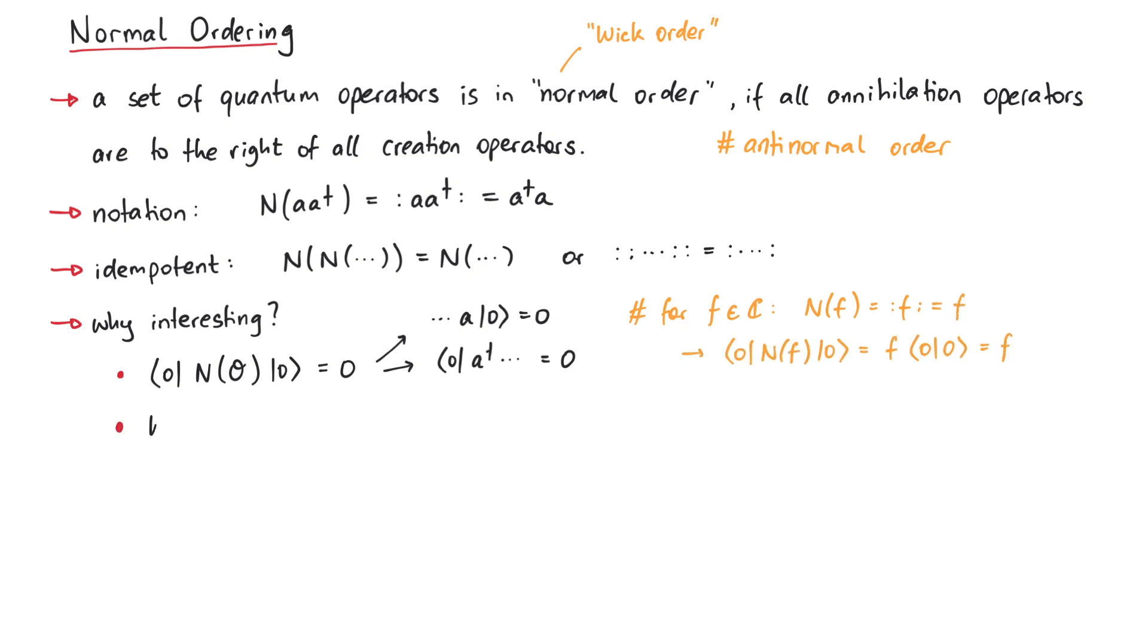Furthermore, normal ordering is an important ingredient in Wick's theorem, which states that the time ordered product is equal to the normal ordered product plus the sum of all possible contractions of operators. Wick's theorem deserves a video on its own, so let us now discuss in detail how to perform the normal ordering of quantum operators.